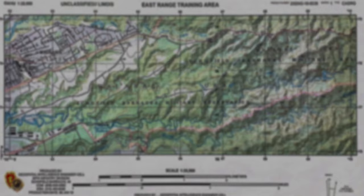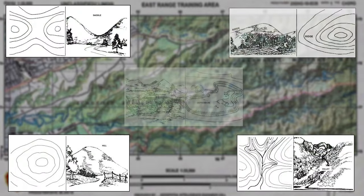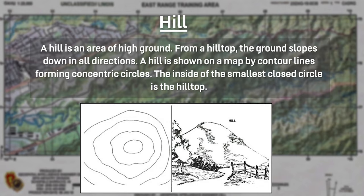Among those 10 terrain features there are five major terrain features: hills, saddles, valleys, ridges, and depressions. They are uniquely represented on maps. A hill is an area of high ground; from a hilltop the ground slopes down in all directions. A hill is shown on a map by contour lines forming concentric circles. The inside of the smallest closed circle is the hilltop.